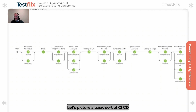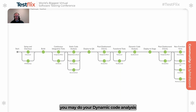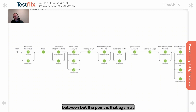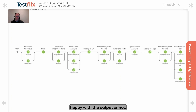Here is a basic CI/CD pipeline and how it would look — yours might look different and you'd probably use different tools to achieve the same thing. You might not always have stages in exactly the right order; you may want to use some non-functional checks earlier, do your dynamic code analysis earlier, and deploy in different stages depending on whether you have a QA environment, staging environment, or other environments in between. But the point is that at each of these steps, it's very easy to put checks in place to confirm we're happy with what we've got, and to have defined criteria for each step so we can automate it, check the response, and determine from an automated perspective whether we're happy with the output.